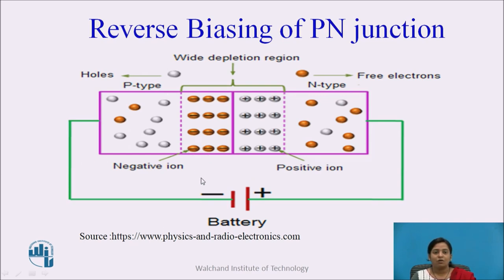In reverse biasing, the negative terminal of the external DC source is connected to the P-side and the positive terminal is connected to the N-side. Due to the positive terminal, the negatively charged electrons from N-side are attracted towards the positive terminal, and positively charged holes from P-type are attracted towards the negative terminal. Due to that, the width of the depletion region increases — that is, the depletion region expands. So the barrier resistance increases and majority charge carriers cannot flow through the junction, resulting in zero current due to majority charge carriers.